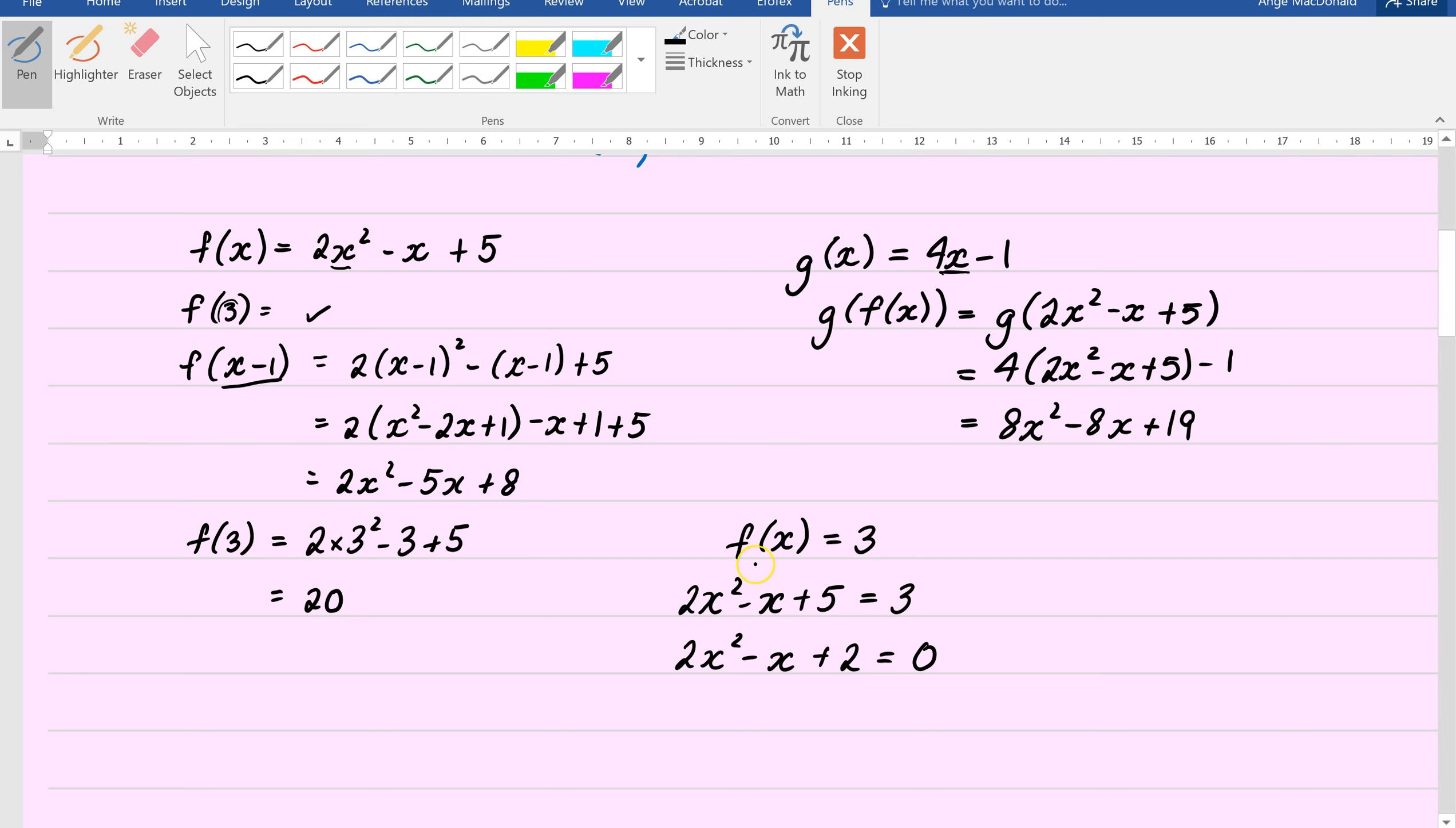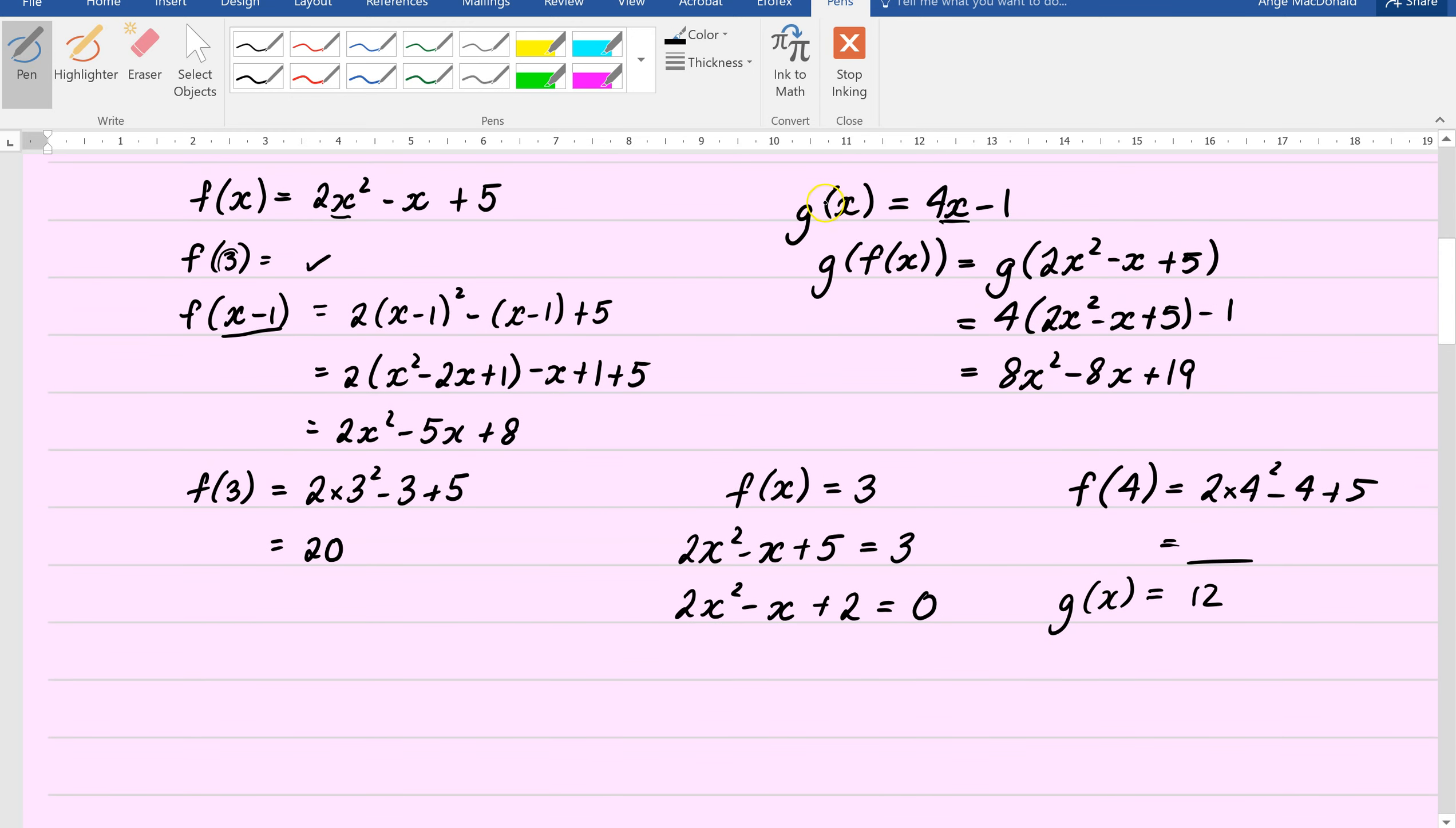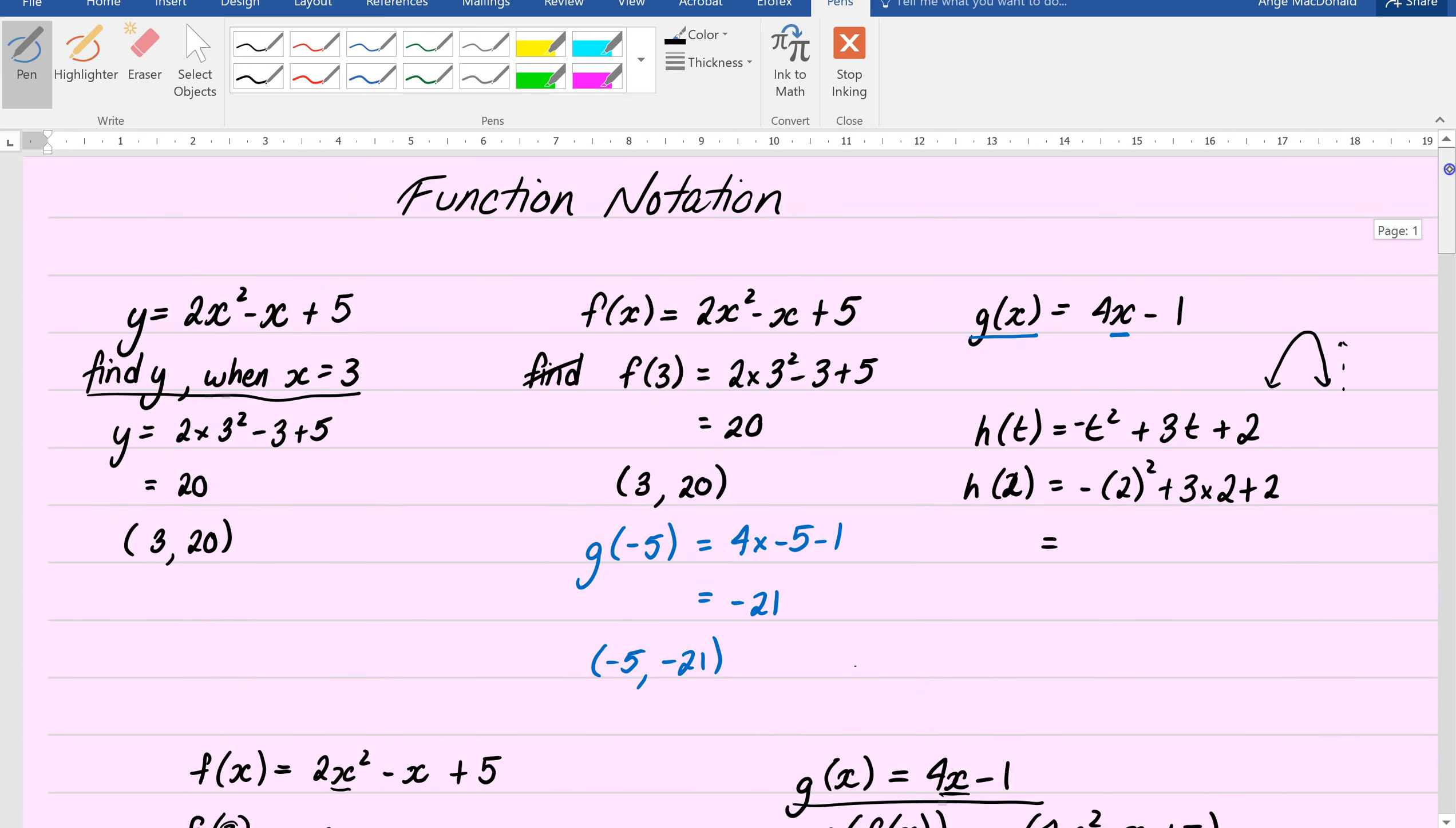Okay, between when we're actually asking you to replace x with something. So if I had f of 4, that is saying go to your f function, and wherever the x is, replace it with 4. Okay? So that'll be 2 times 4 squared take 4 plus 5, and we end up, bang, we get an answer. But if we had g of x equals 12, that is not saying replace x with 12. That is saying now go to your g function up here, and it equals 12. So it's 4x take 1 equals 12, and now we can solve. So that's 4x equals 13, therefore x equals 13 over 4. So hopefully that gives you a little bit of a rundown of function notation. Cool.